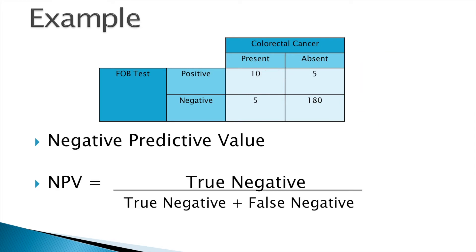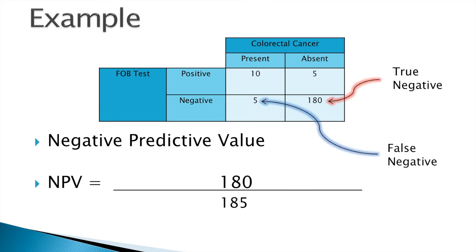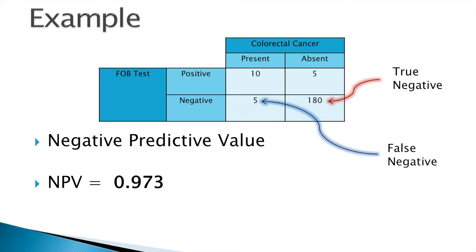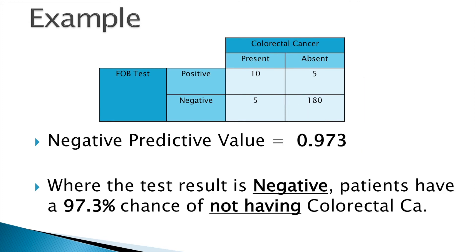For negative predictive value, we know that it is equal to the true negatives divided by the true negatives plus the false negatives. We identify the true negatives and the false negatives in our table and put them into our equation. When calculated, the negative predictive value is 0.973, meaning that when the test is negative, patients have a 97.3% chance of not having colorectal cancer.